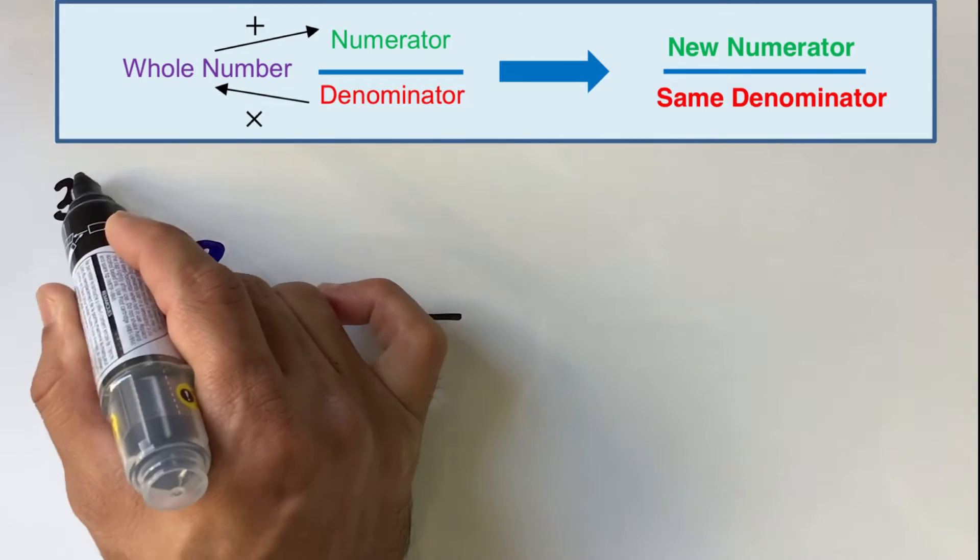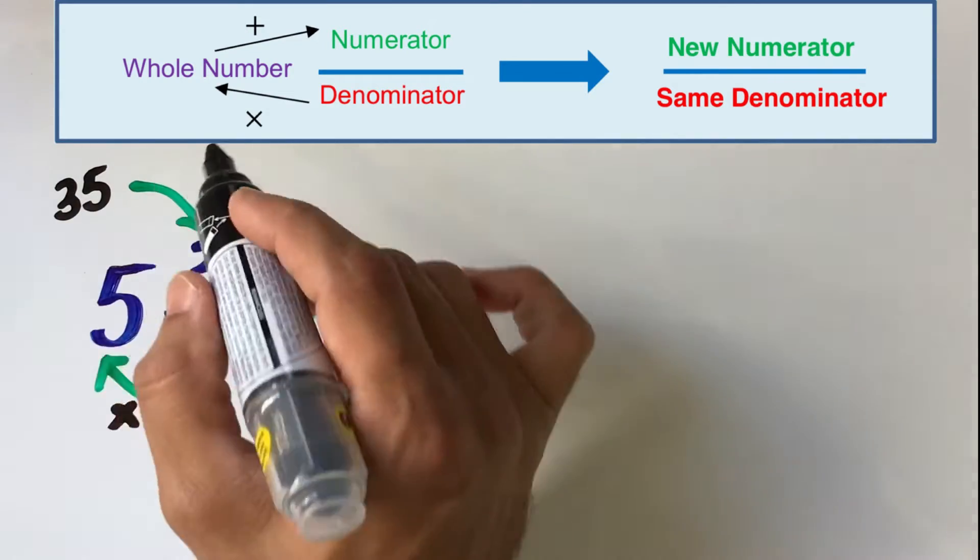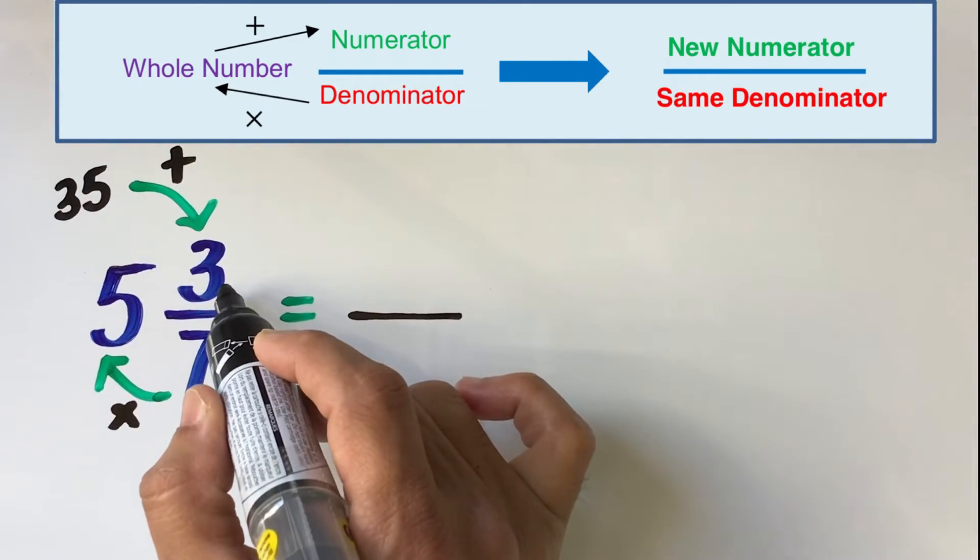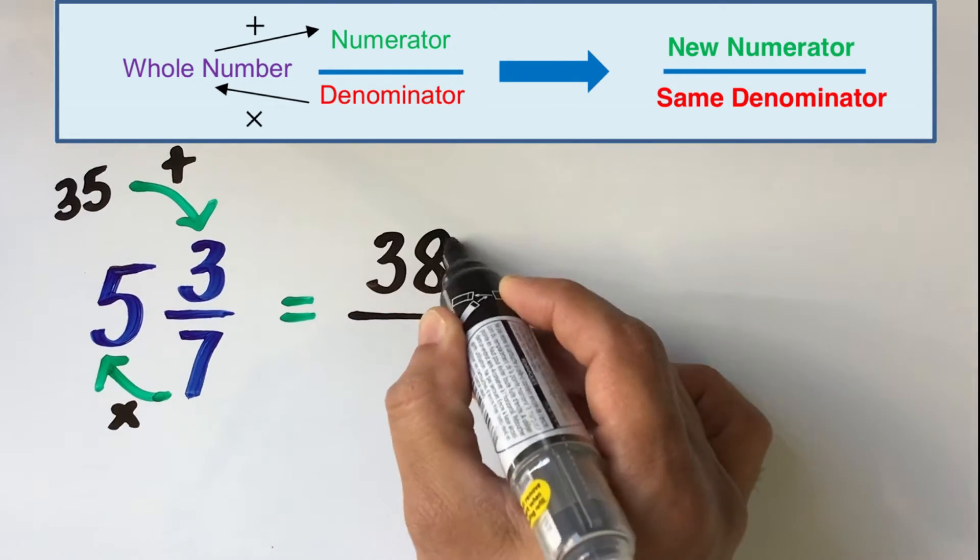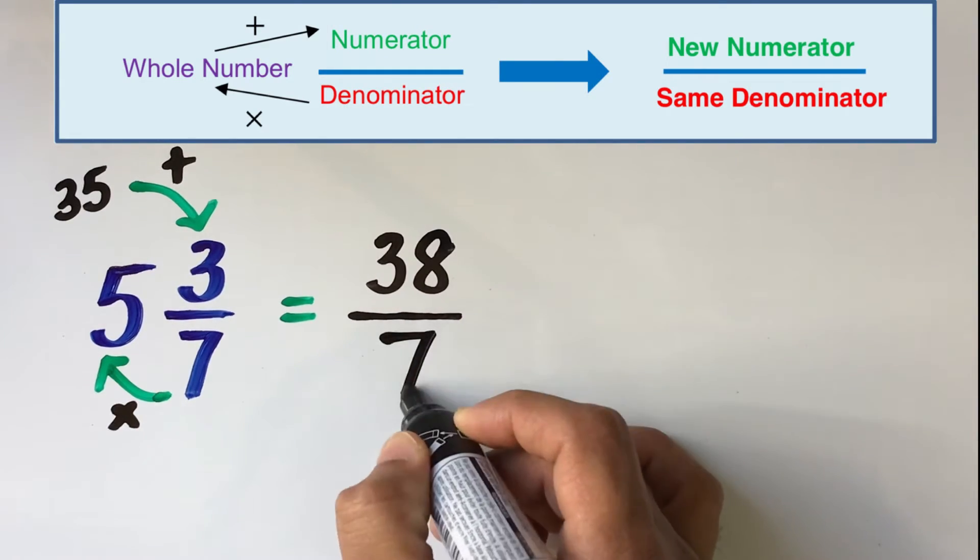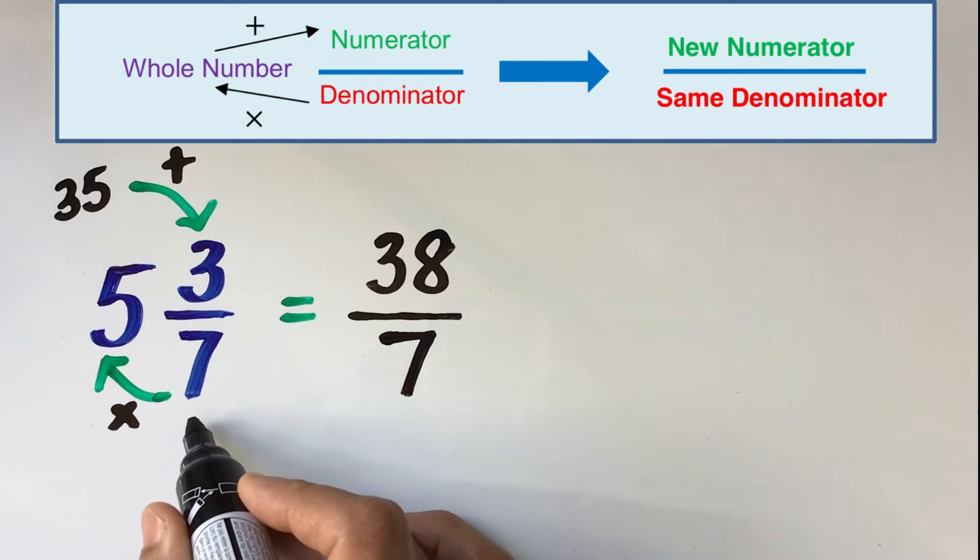7 times 5 gives us 35 and we add this result to the top number or the numerator. So we have 35 plus 3 which gives us 38.